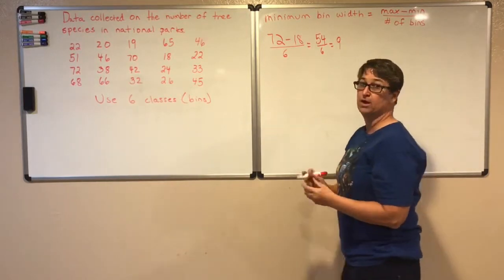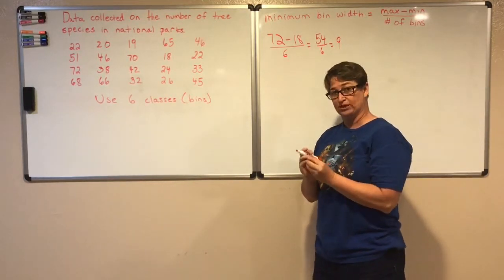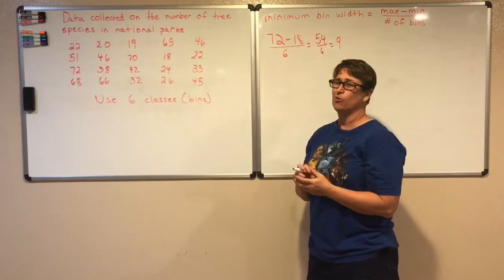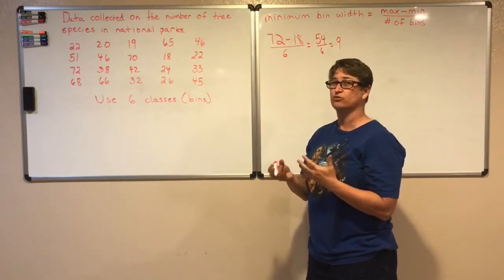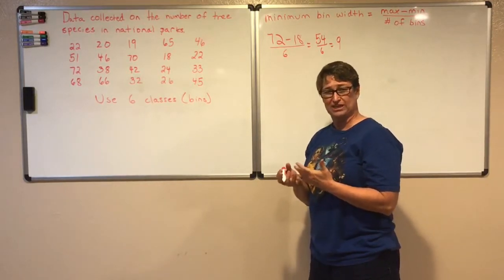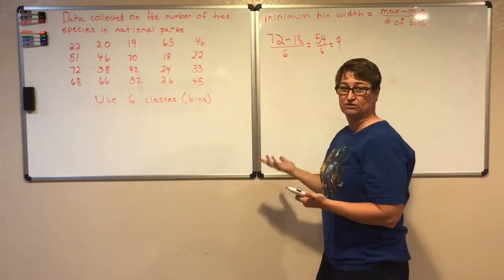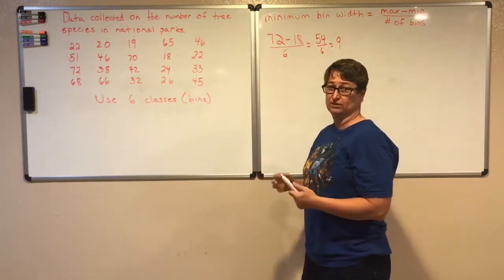Now that's the minimum that I can have my bin widths be. But maybe I want to use a nice round number something that's kind of pretty and easy to count by. And nine is really close to 10, so let's use 10.